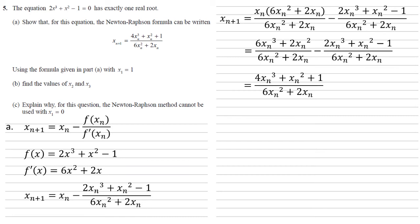The 6x n cubed minus the 2x n cubed will leave us with 4x n cubed. The 2x n squared minus x n squared leaves us with x n squared. And then we've got minus negative 1 giving us a plus 1 on the top and on the bottom 6x n squared plus 2x n as required.